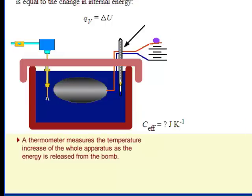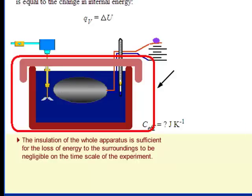A thermometer is used to measure the temperature increase from the heat of combustion. On the time scale of the experiment, no heat can escape from the system.